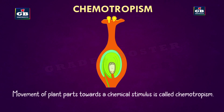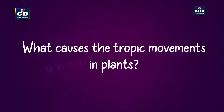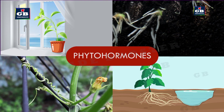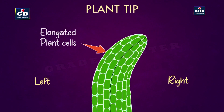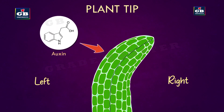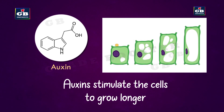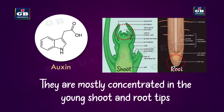Chemotropism responds to chemicals — for example, a pollen tube growing towards the ovule. These movements are controlled by special chemicals called phytohormones. If a plant bends to the right side, cells on the left side grow longer due to a hormone called auxin. Auxins help cells grow longer, are responsible for tropic movements, and are found in shoot and root tips.